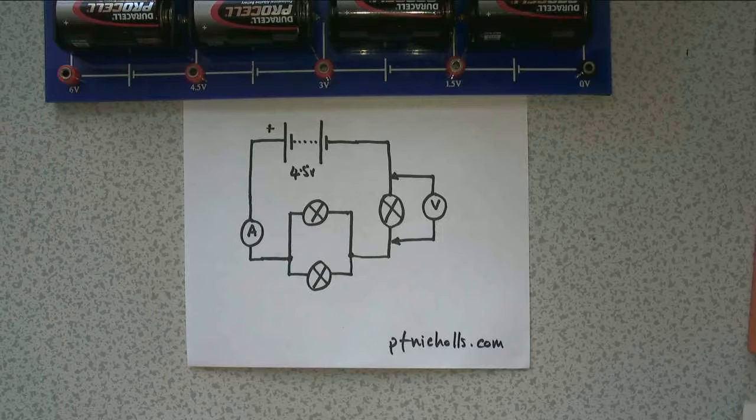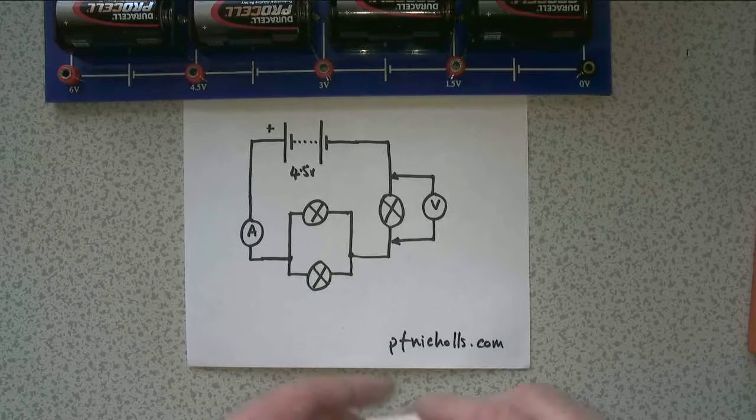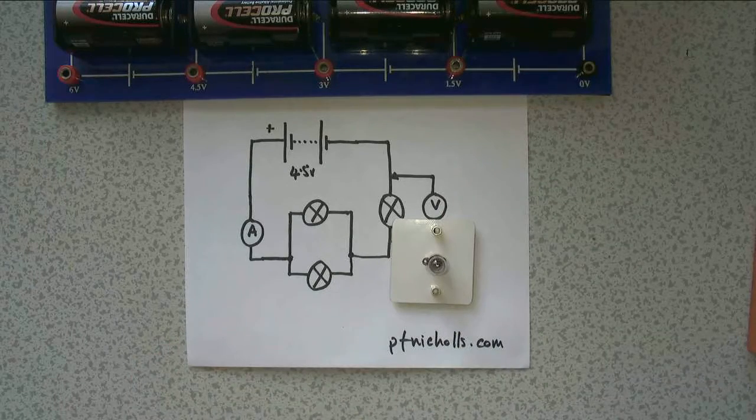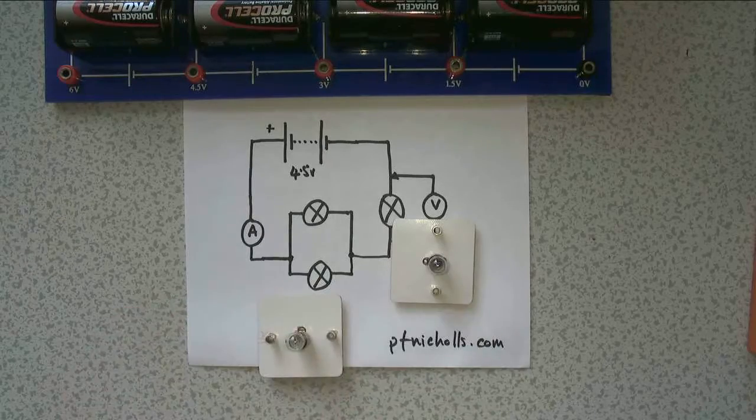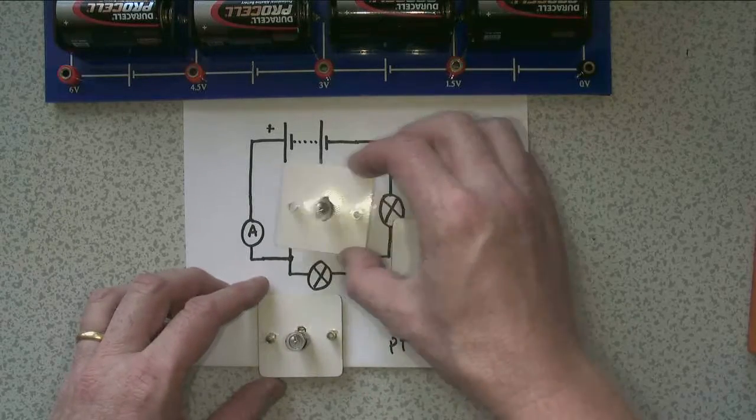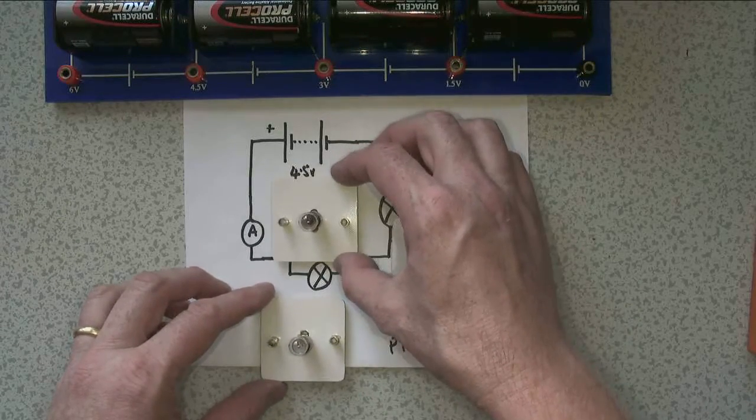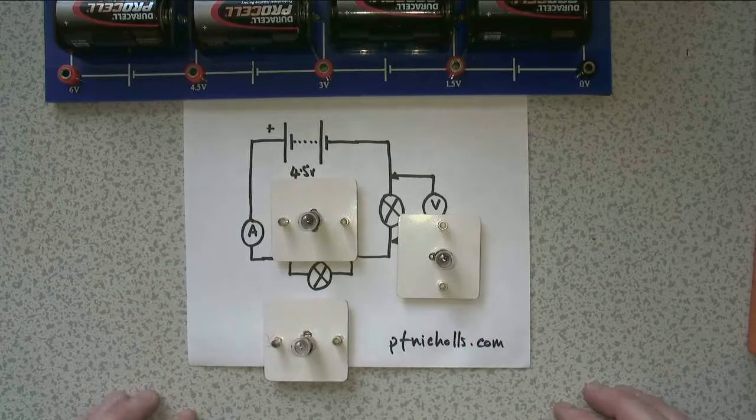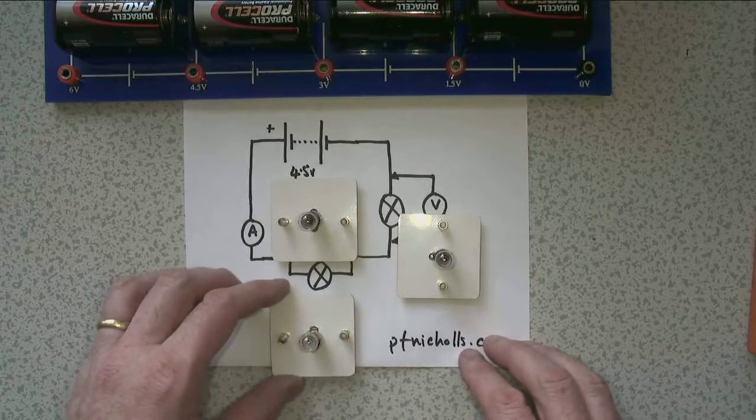First of all, we're going to start with our components. So here is a bulb, here is another bulb, and here is another bulb. And I'm actually going to put that bulb on top of its picture. Notice here how I've laid the bulbs out in the same order as the circuit diagram. This is going to make my life easier.